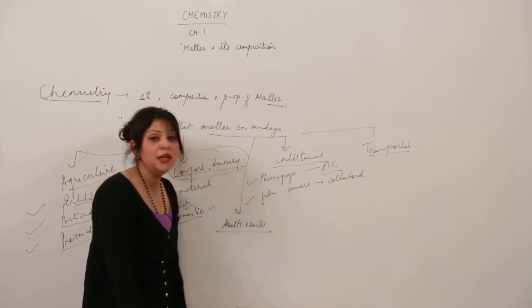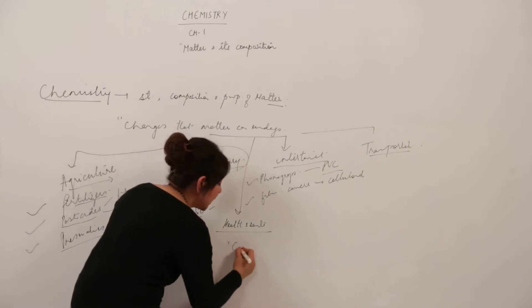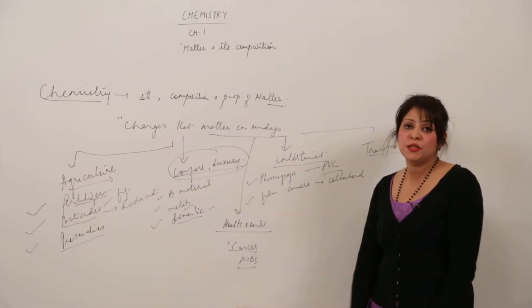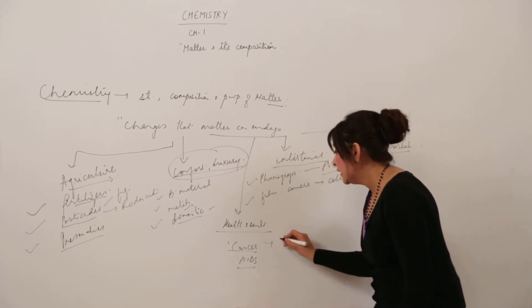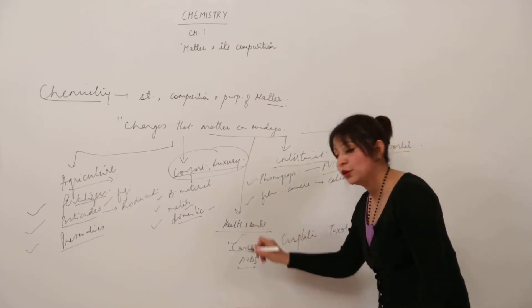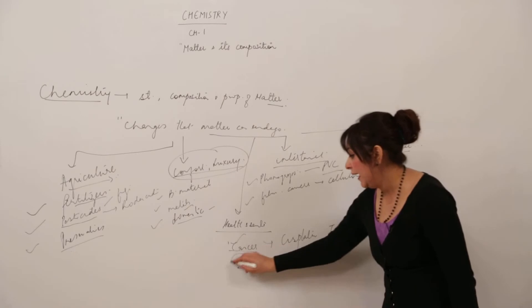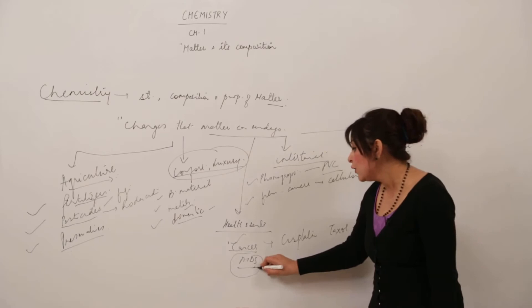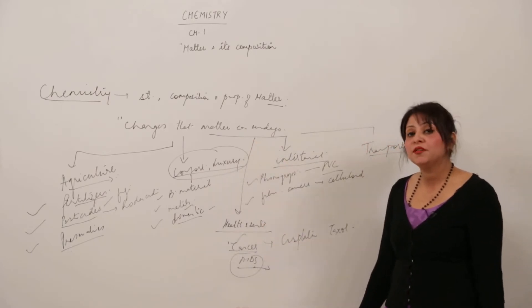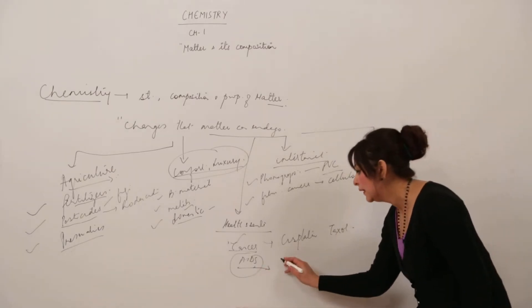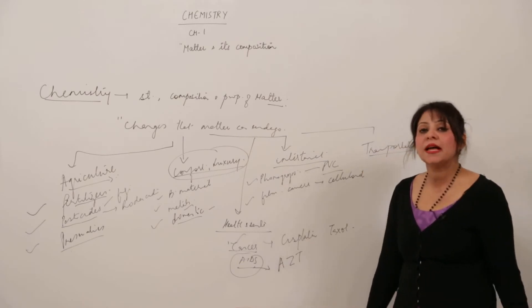There are many incurable diseases, including cancer and AIDS. With development in chemistry, we now have cures. For cancer treatment, drugs like cisplatin and taxol have made it curable and saved many lives. AIDS—acquired immunodeficiency syndrome—was incurable, but now we have the life-saving drug AZT, azidothymidine.